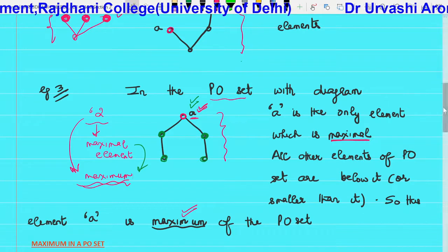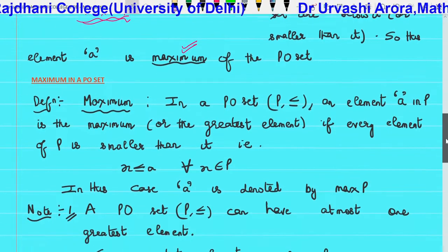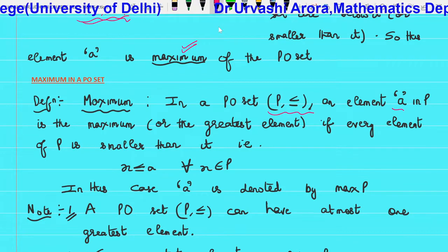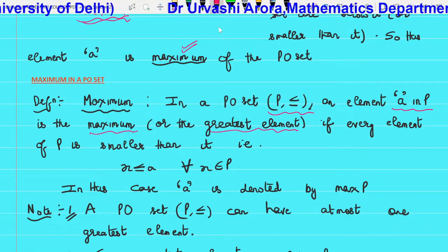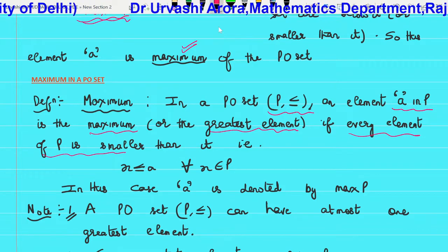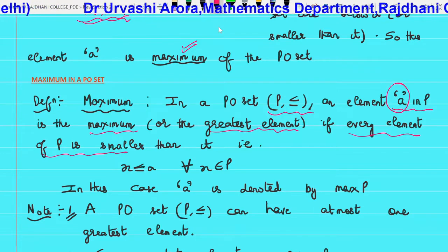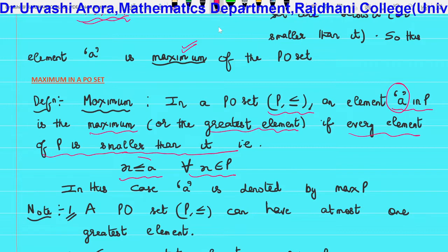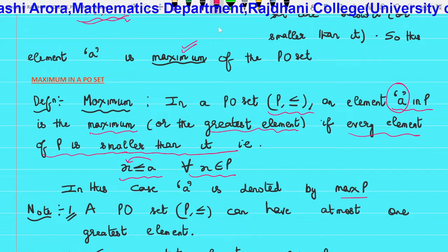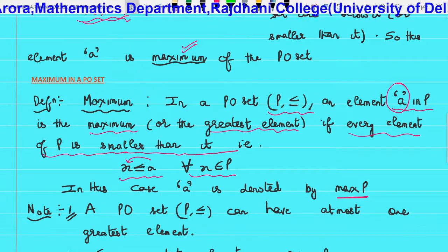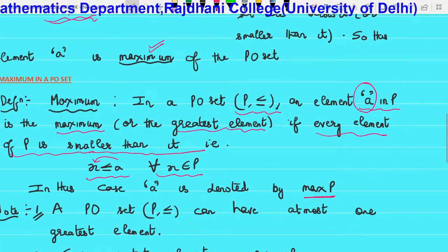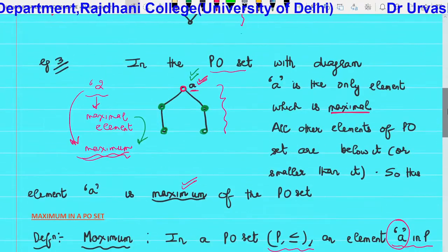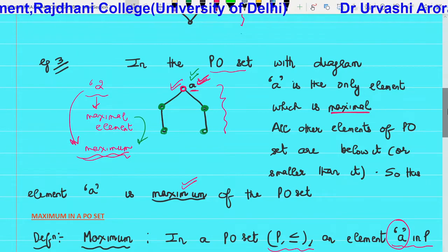This gives us the definition of maximum. If (P, ≤) is a PO set, then an element a belonging to P is said to be maximum — or greatest element — if every element of P is below it, meaning x ≤ a for all x belonging to P. In this case a is denoted by max P. We have already seen in Example 3 that since A was the only maximal element, it became the maximum as well.